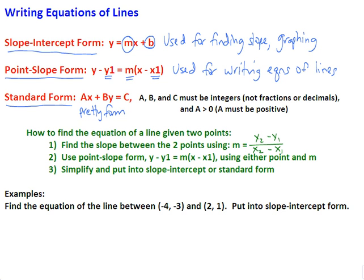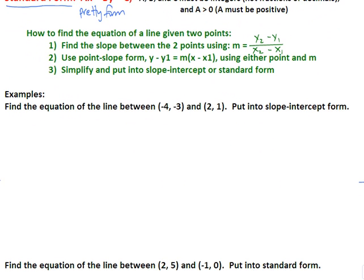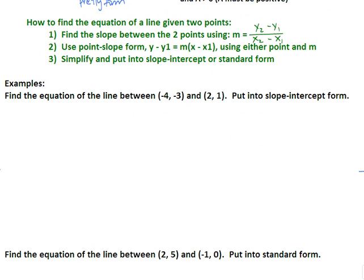The first kind of problem we're going to talk about is how to find the equation of a line given two points. Step one is to find the slope between the two points using the slope formula: change in y over change in x. Once we know slope m, we use point-slope form, plug in y1, x1, and m. Then in step three, we simplify and put it into the correct form requested.